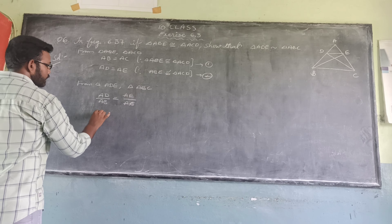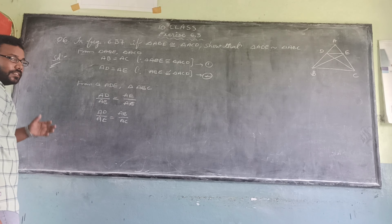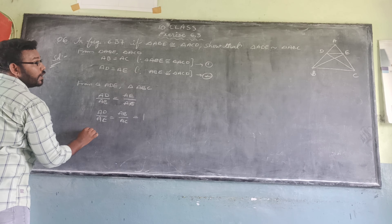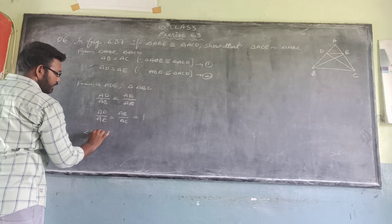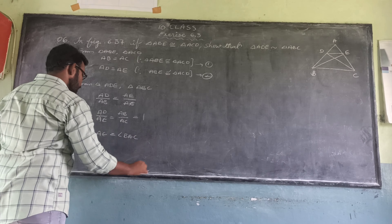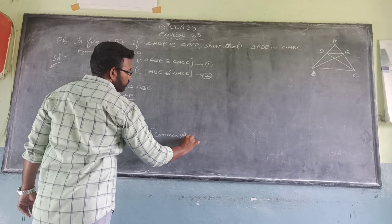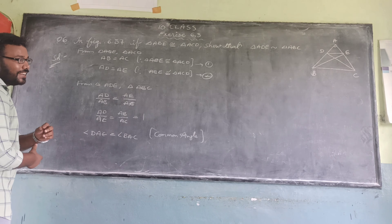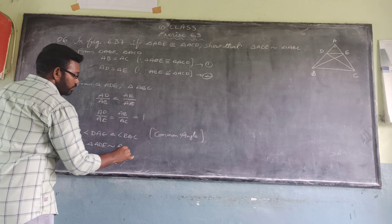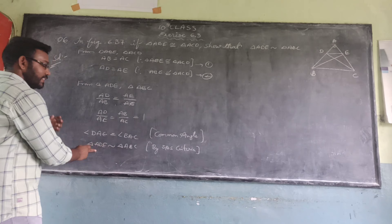If we transfer AB to one side and AE to the other, AB by AE is equal to AB by AC. This is a common angle. By using the SAS criteria, we can say that triangle ADE is similar to triangle ABC by SAS criteria.